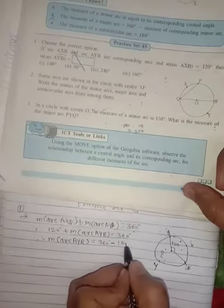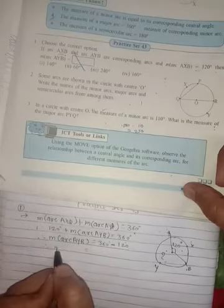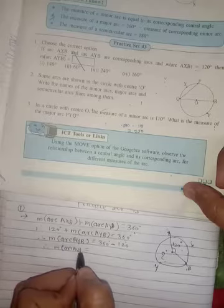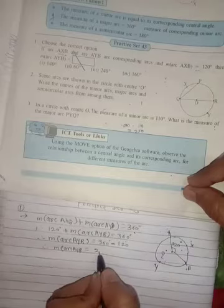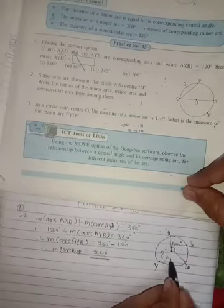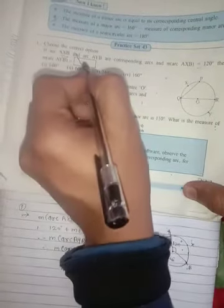Therefore, measurement arc AYB is how much? 360 minus 120 is 240 degrees. So this is 240 degrees. Our answer is question number third, so it is 240 degrees. This is the answer.